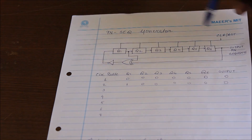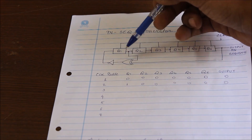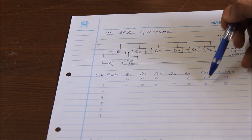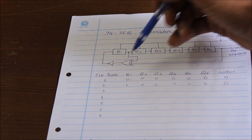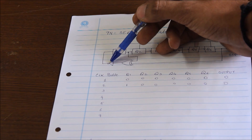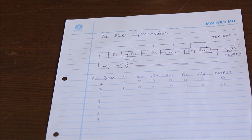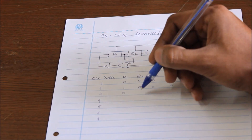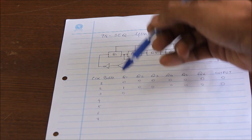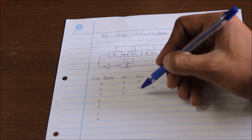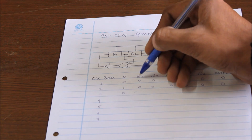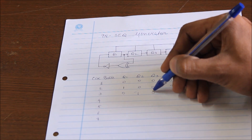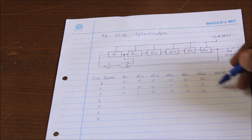Again, the outputs of Q6 and Q1 are XORed and then passed through NOT. So 1 XOR 0 gives 1, and the NOT gate inverts it to 0. This 0 is the new feedback, and the previous 1 is shifted right to Q2. All remaining stages are 0, and the output remains 0.